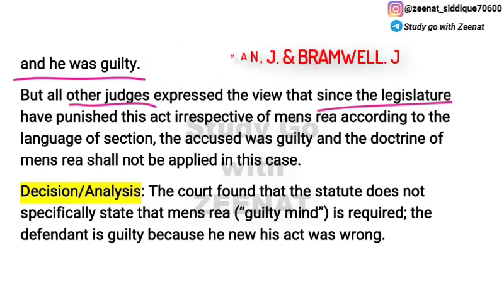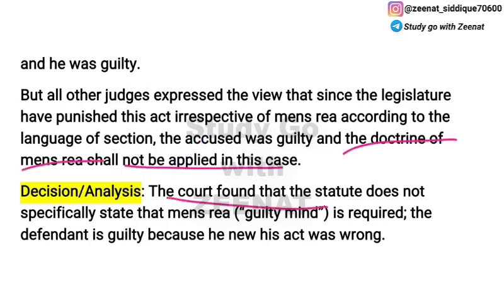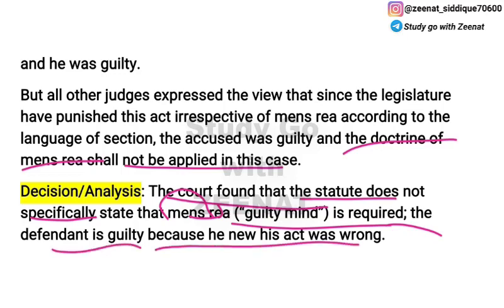Taking a girl away is morally wrong, and under Section 55 it is also a legal offense. So for malum in se offenses, mens rea need not be proved separately — it is presumed. Since Prince committed an immoral act by taking the girl away, his mens rea was presumed under Section 55 and he was held guilty. The statute did not expressly state that guilty intention was required.